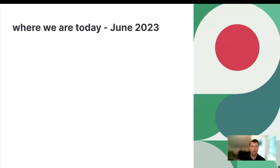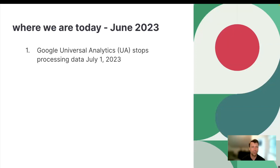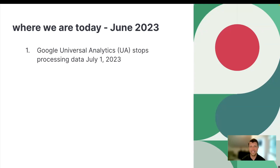First, I just want to talk about where we are in June 2023. Universal Analytics is going to stop processing data as of July 1st, 2023. You may have been getting email warnings. You may have seen things pop up when you get into Universal Analytics. Needless to say, Google is doing a good job of alerting us that this is coming up.